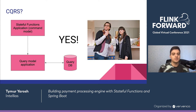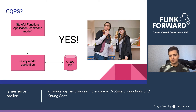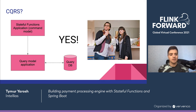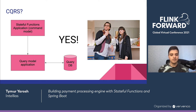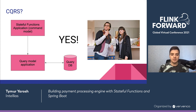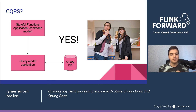Stateful Functions are good at performing operations, but external applications can't easily query data from your functions. The solution is CQRS — split your application into command and query models. Command models are stateful functions that share state updates into an egress: whenever a state change occurs, the function sends a message to the egress. A query model application, implemented with any suited technology, consumes those messages, updates a query database, and provides a query API.